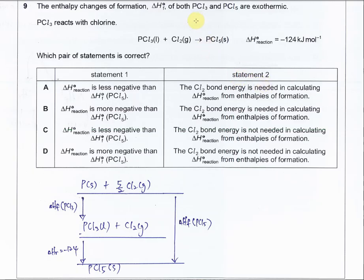First, the statement is Delta HF of PCL3 and PCL5 are both exothermic, and the Delta HR is given, which is the PCL3 with chlorine to form PCL5. But this is not formation because formation must involve elements. So we need to use the elements to form the PCL3 and PCL5.